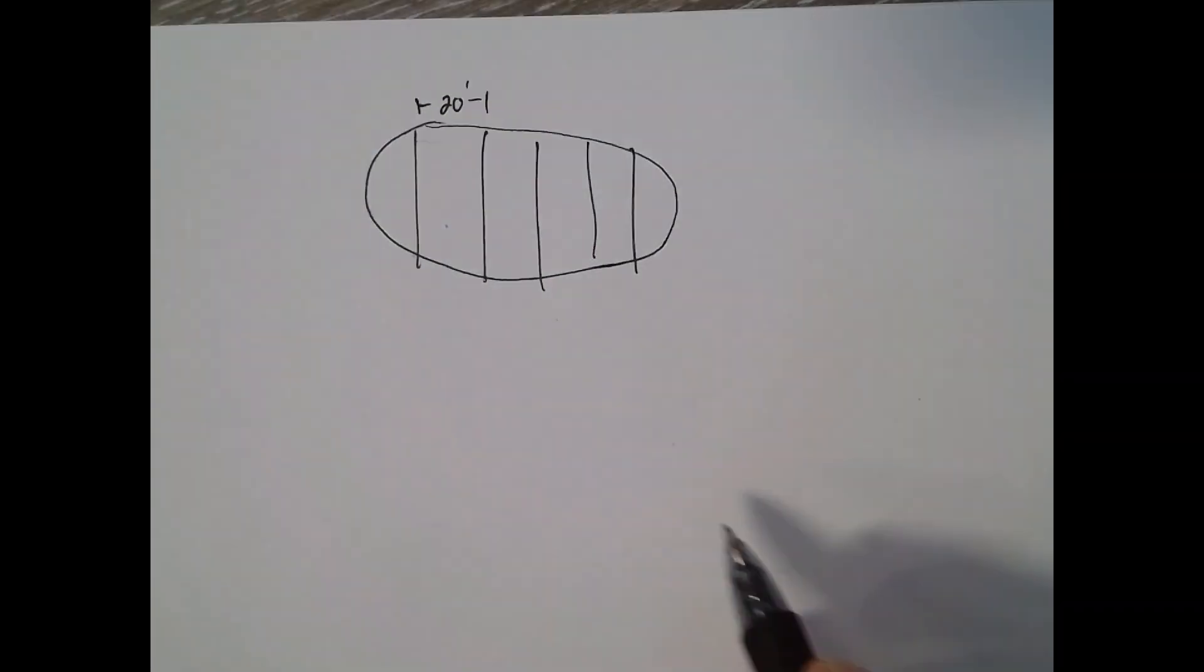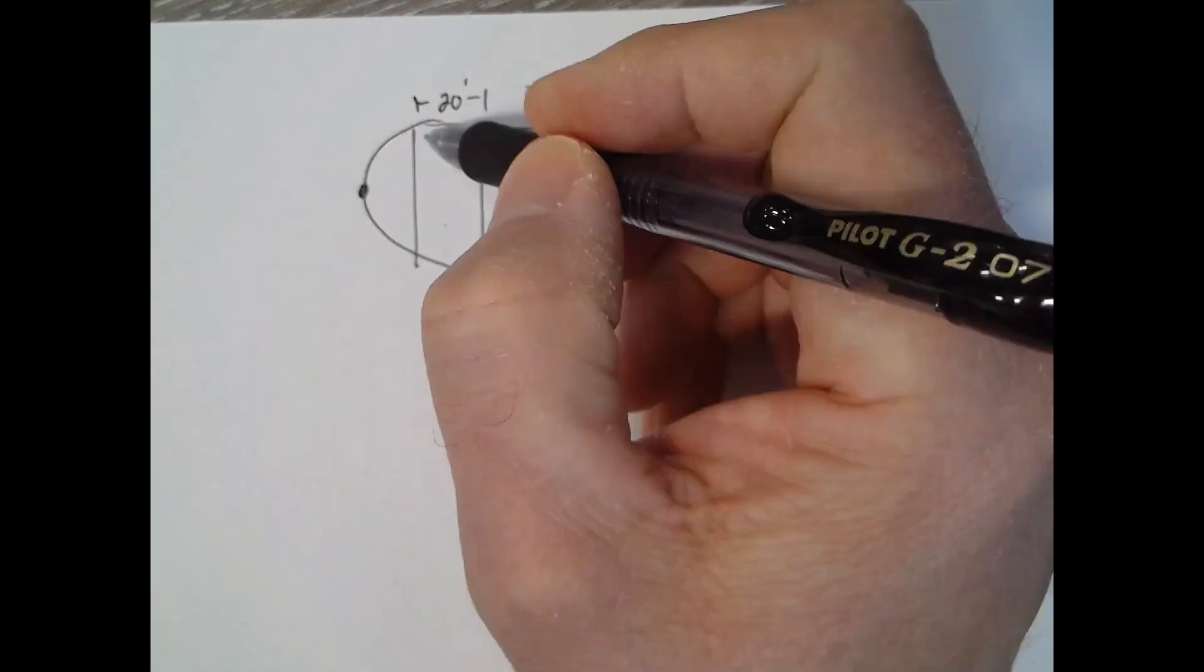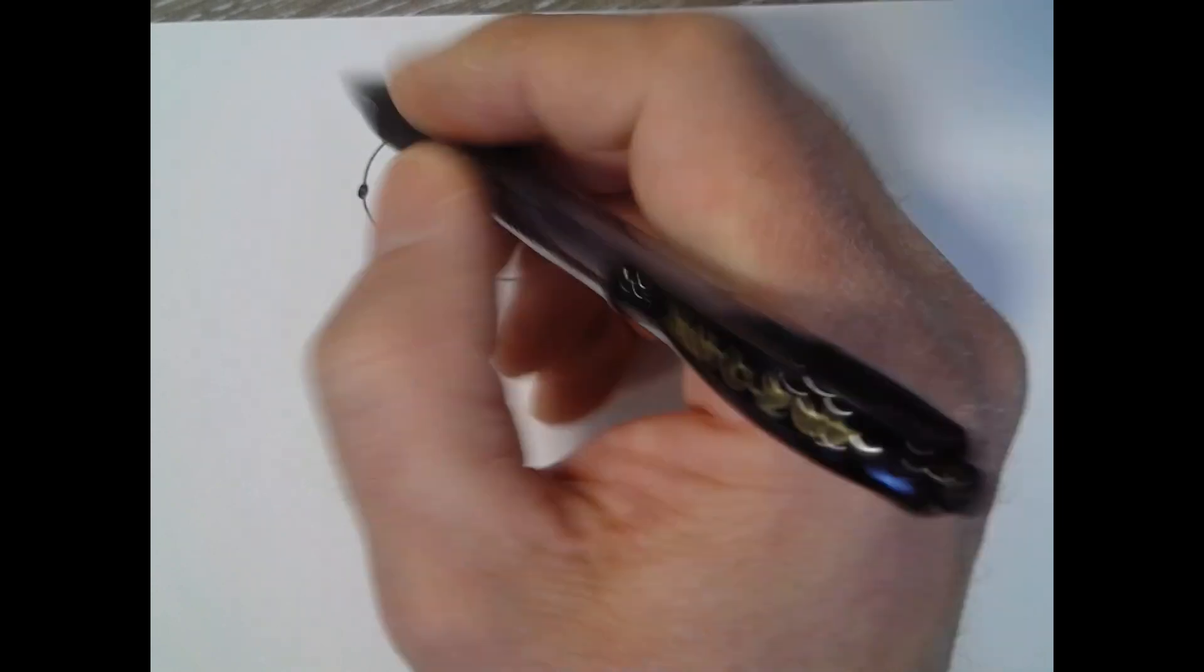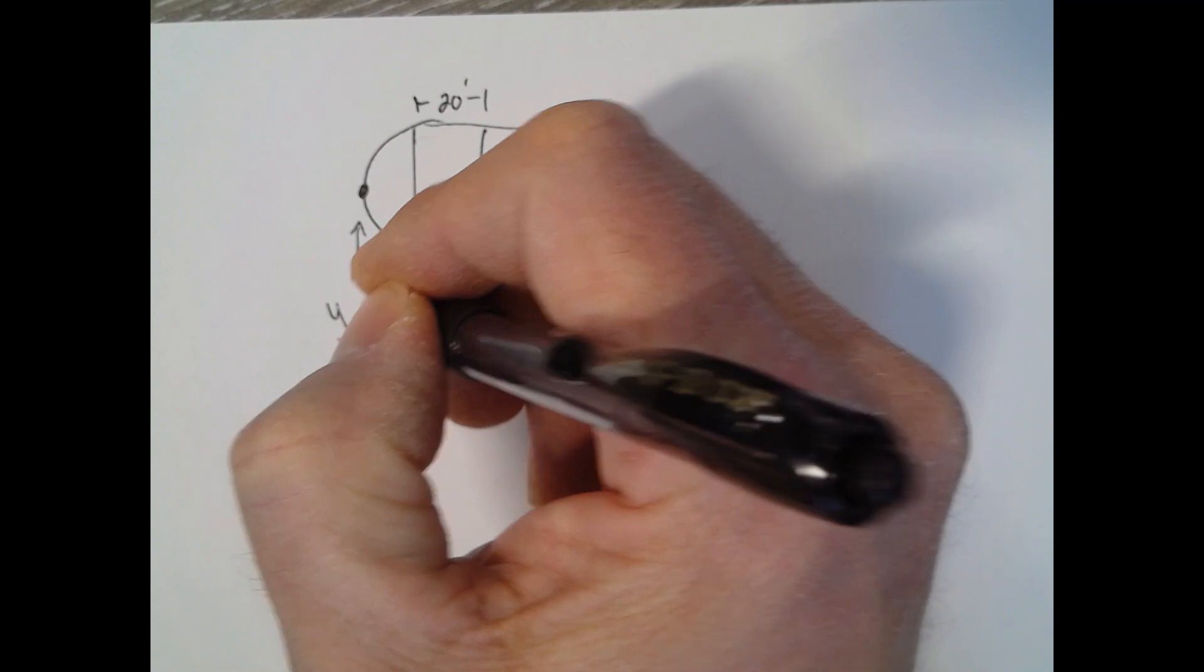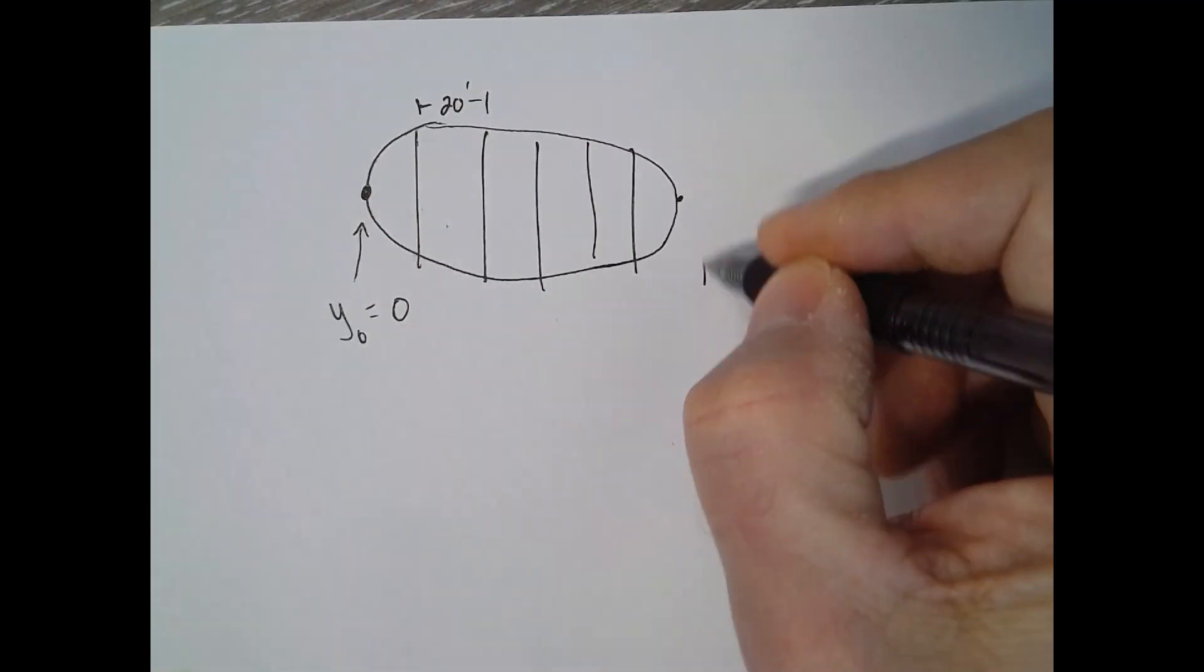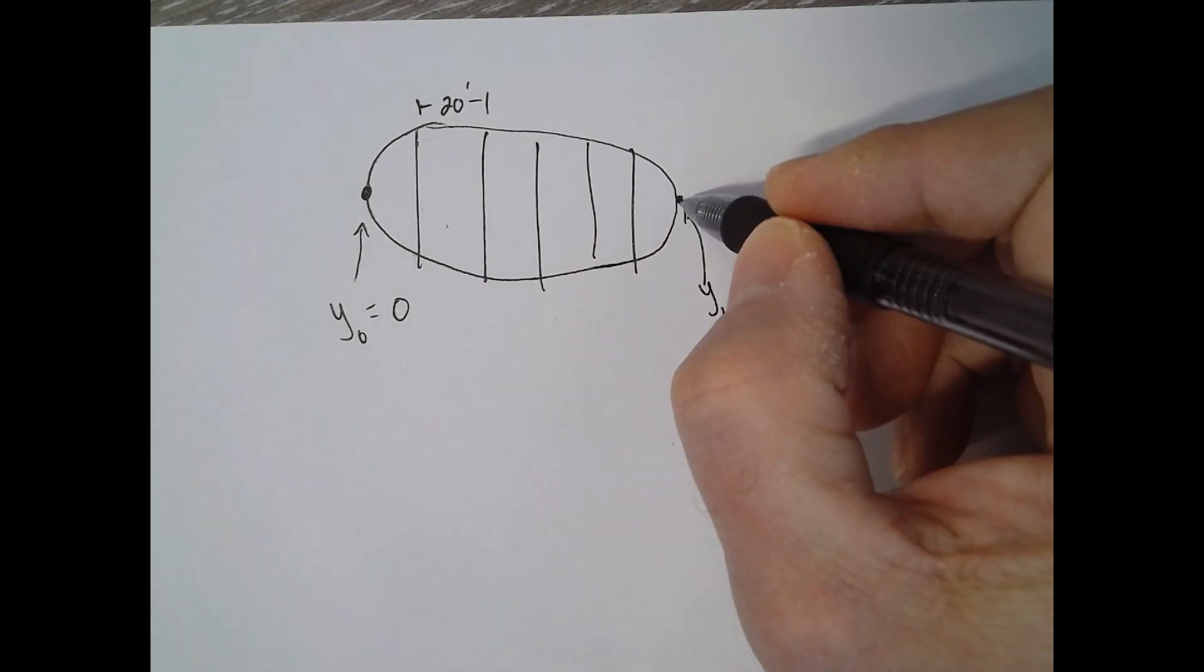You need to remember or consider that your first y value, like if this is not your first y value because you've got all this area, so your first y value y sub zero is actually zero. And your last one is going to be zero, so y sub n is zero because it goes down to a point. Think of it, so its distance is zero.